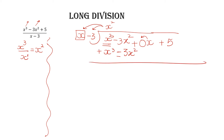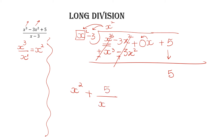Change the sign: plus becomes minus, minus becomes plus. Plus x³ minus x³ cancels; -3x² plus 3x² cancels. The 0x term — anything multiplied by 0 is 0, so no need to write it. Bring down the 5. Here x has a 0 power whereas the divisor has x to the 1 power, so stop here. Write the quotient x², then remainder over divisor: 5 over (x-3).